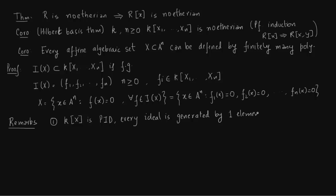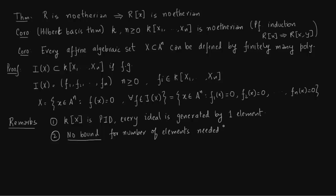For the second remark: if you have k[x, y], a polynomial ring in two variables, there is no bound on the number of elements in a minimal generating set for an ideal. The number of generators will be finite, but we cannot a priori give a bound for it.